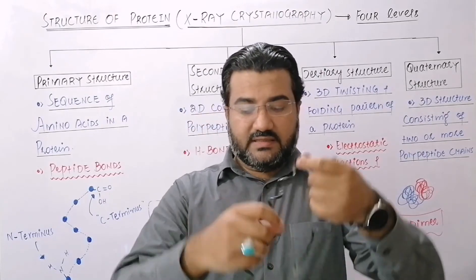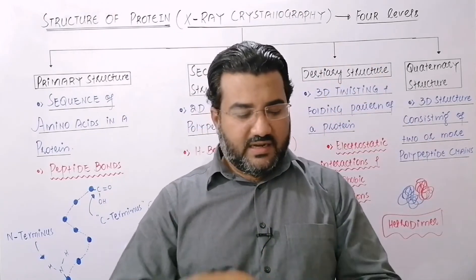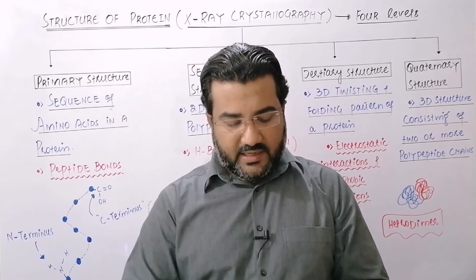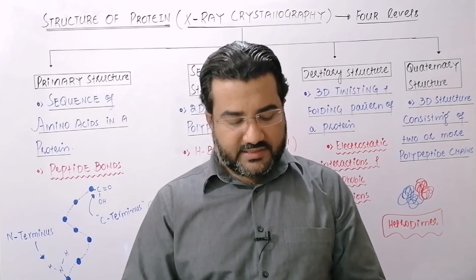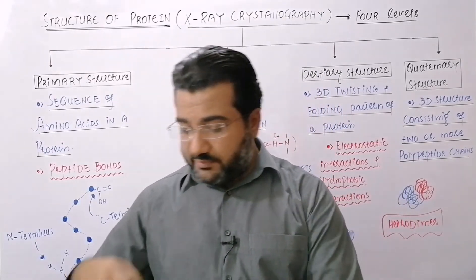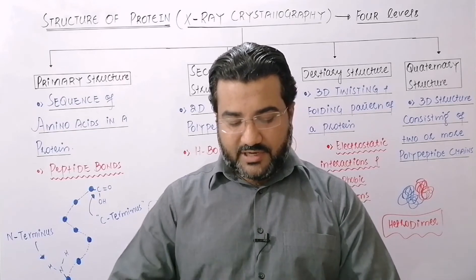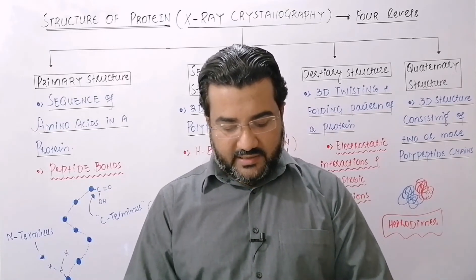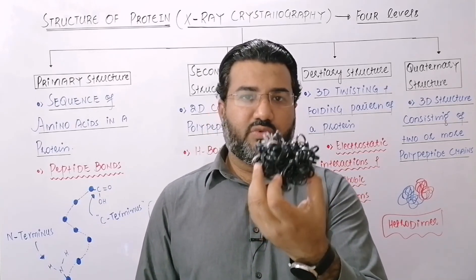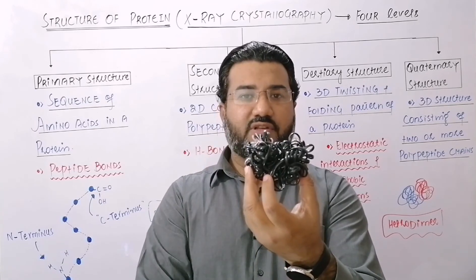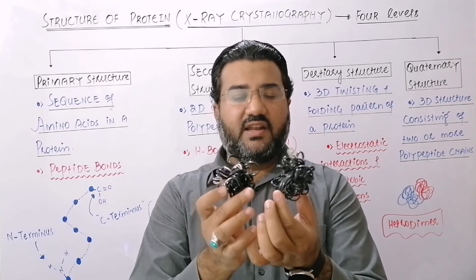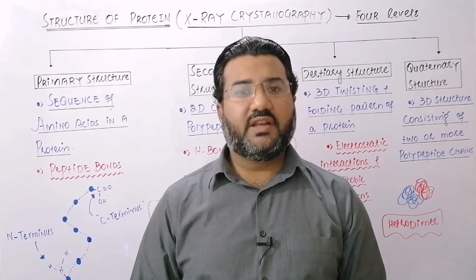If this alpha helix or secondary structure undergoes three-dimensional twisting, coiling, or folding, then that is called the tertiary structure of the protein. And if there are more than one polypeptide chains that are specially arranged with respect to each other, then that structure is called the quaternary structure. Here is the combination of two polypeptide chains with a special arrangement — that is an example of the quaternary structure of the protein. In this way, the wire analogy helps us understand the concept of protein structure in a simpler way.